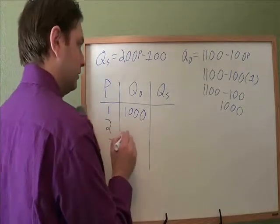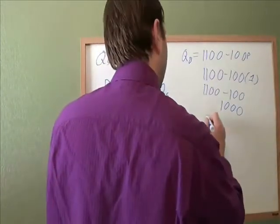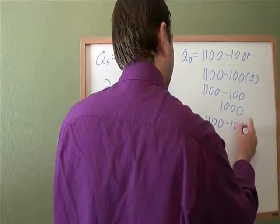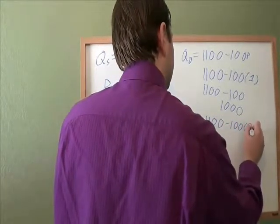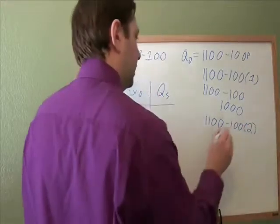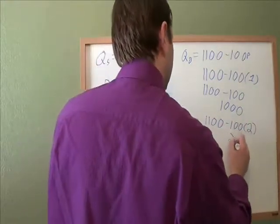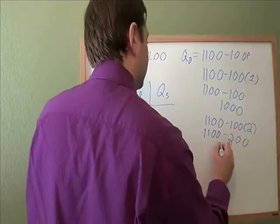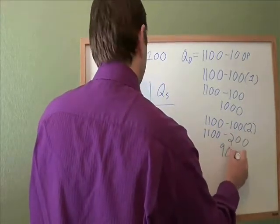And then you do the same thing for $2. We'll plug 2 into there. 1,100 minus 100 when p is $2. Well, 100 times 2 is 200. And then 1,100 minus 200 leaves you with 900.